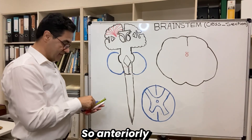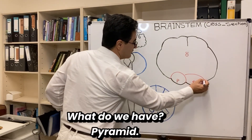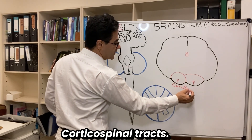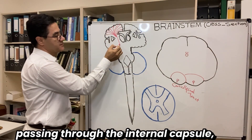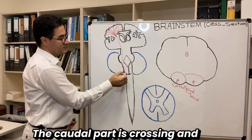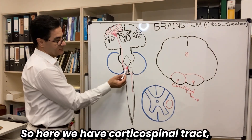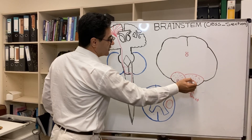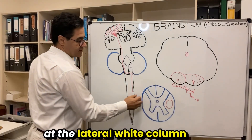Anteriorly you can find the pyramids — two pyramids. What do we have in the pyramid? We have corticospinal tracts. They are coming from the cortex, going down, passing through the internal capsule, passing through the midbrain, then through the pons and medulla oblongata. The caudal part is crossing and running all the way down, getting into the lateral white column. So here we have the corticospinal tract, which is coming from the cortex going down to the spinal cord. It's a descending motor tract, landing in the lateral white column of the spinal cord.